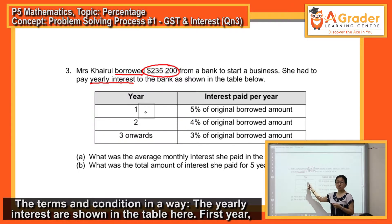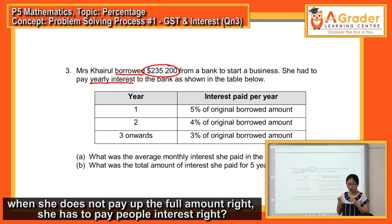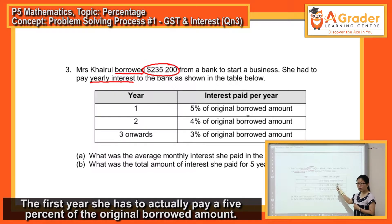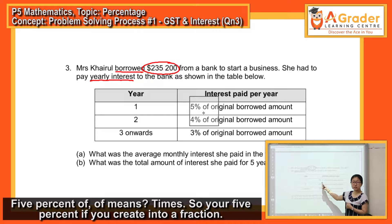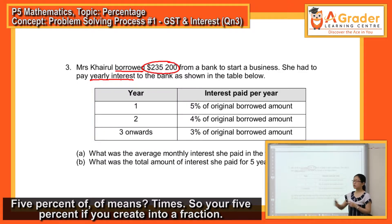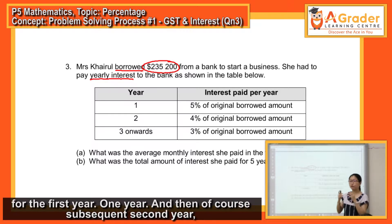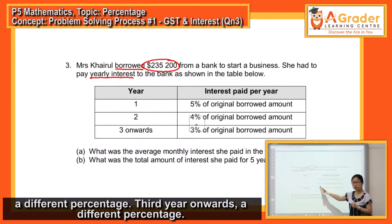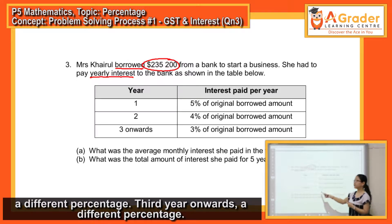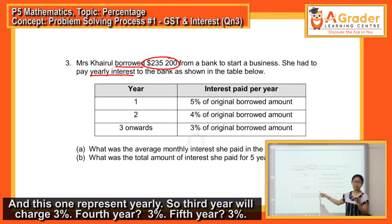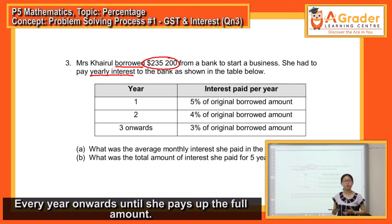So the first year, that means when she does not pay up the full amount, she has to pay interest. The first year, she has to pay 5% of the original borrowed amount. 5% — of means times — so 5% as a fraction, times the original borrowed amount, gives the interest payable for the first year. Then subsequently, the second year is a different percentage, third year onwards a different percentage. Third year will be charged 3%, fourth year 3%, fifth year 3% — every year onwards until she pays up the full amount.